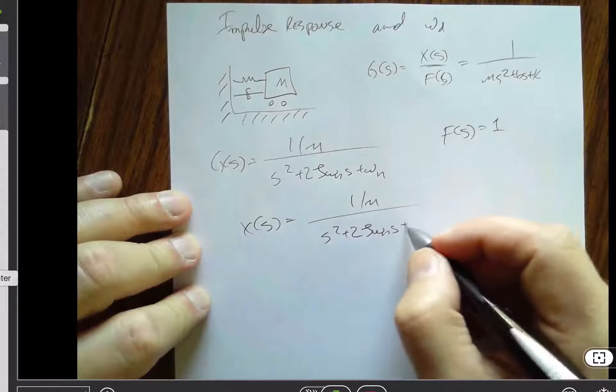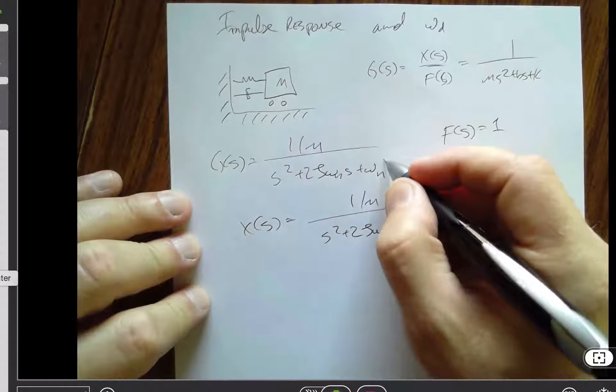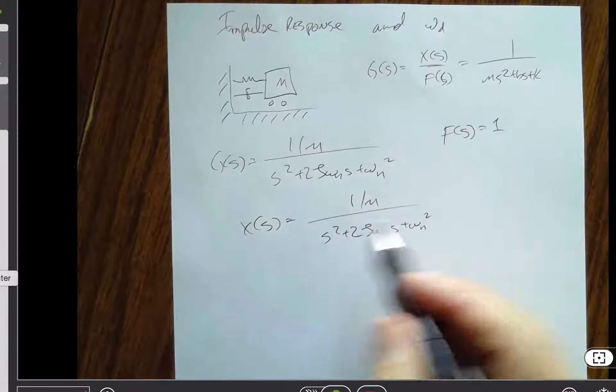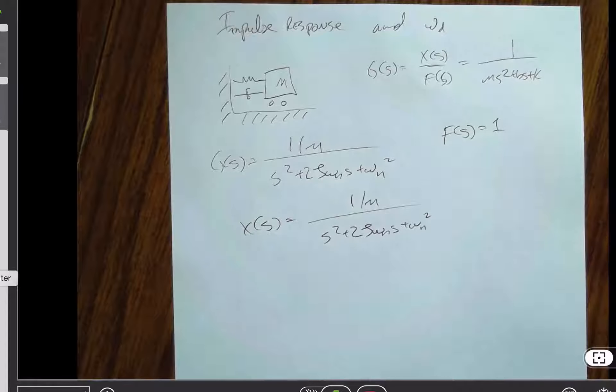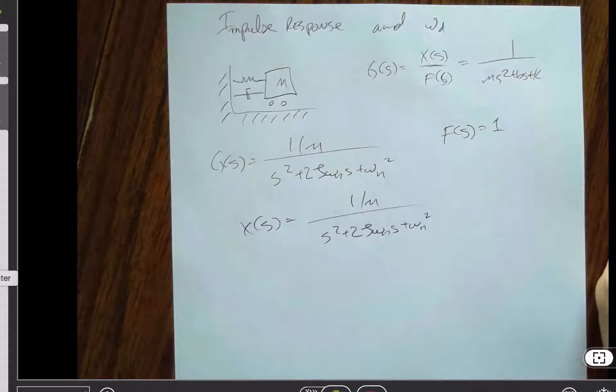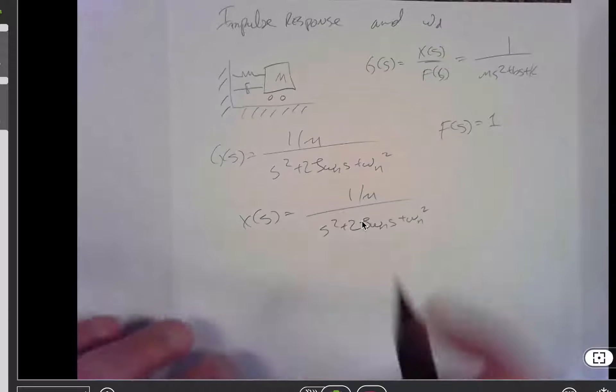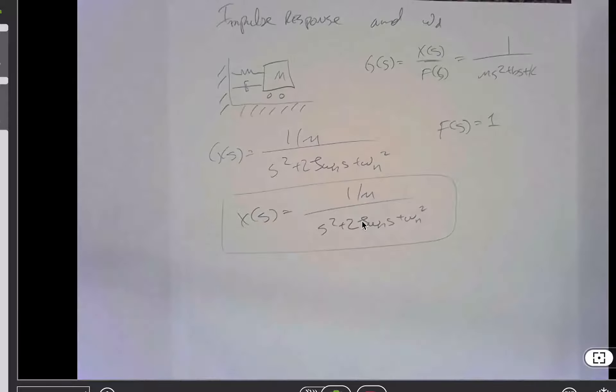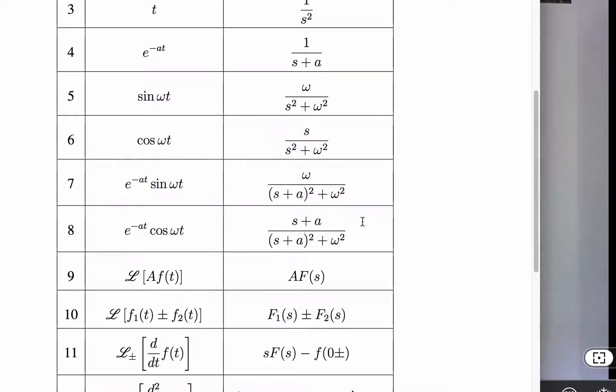And so now we need to figure out how to inverse Laplace that, and we don't have anything in our abbreviated mean overly short Laplace transform table that takes that form. So we have this expression for x of s.